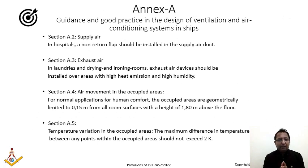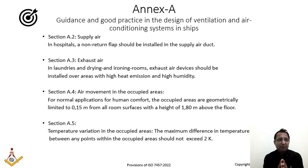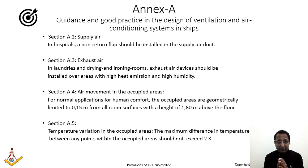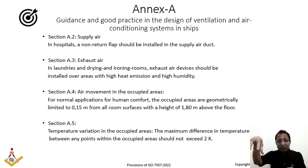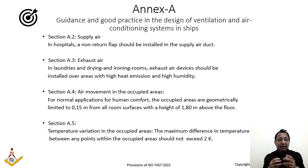Annexure A provides guidance and good practices for designing ventilation and air conditioning systems on ships. Section A.2 states that a non-return damper should be installed in the supply air duct to hospital areas, preventing contaminated air from flowing back to other rooms when the supply is shut down. For laundries and drying rooms, exhaust air devices should be positioned directly over areas of high heat emission and high humidity, such as directly above the dryer.